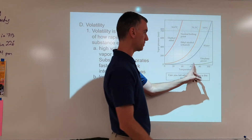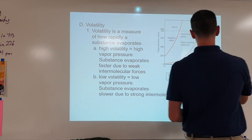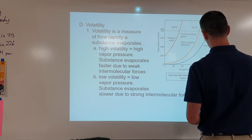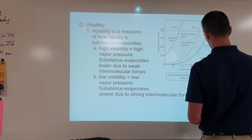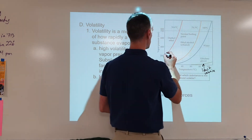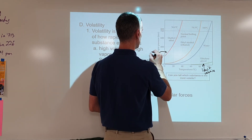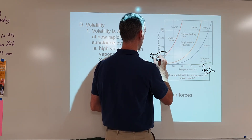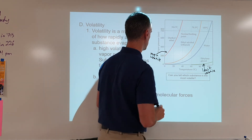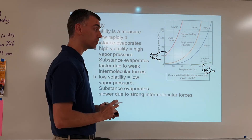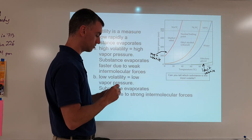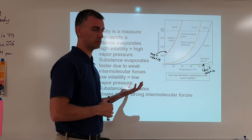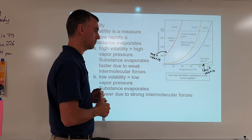So, if ethylene glycol has the lowest vapor pressure, it is also the least volatile. Diethyl ether, with the highest vapor pressure, would be the most volatile. Make sure to label these on the graph on your handout as well, because it helps make things extra clear, particularly when studying for a test.